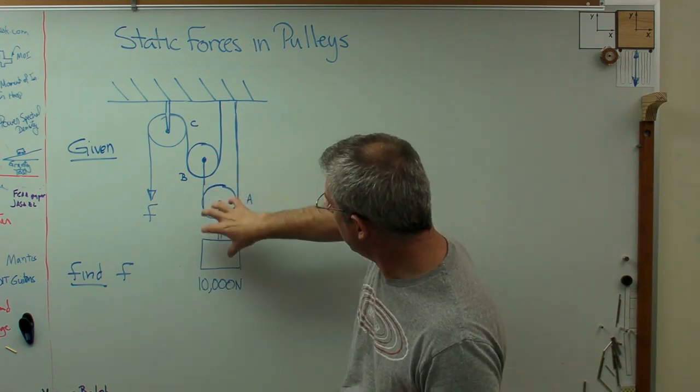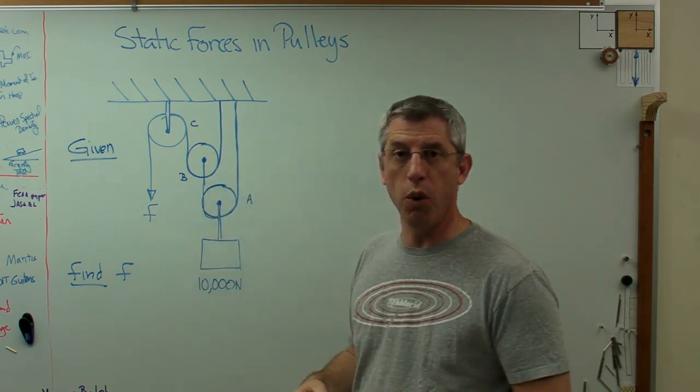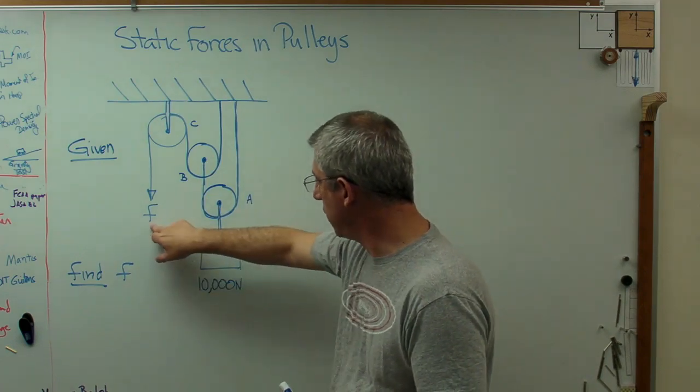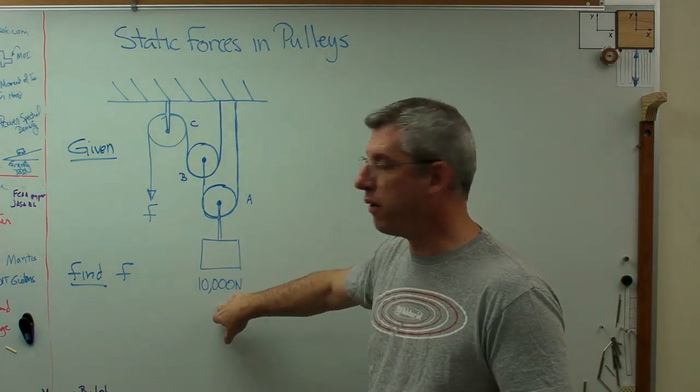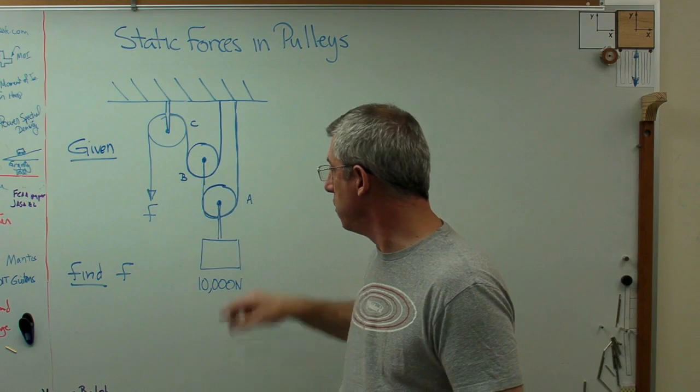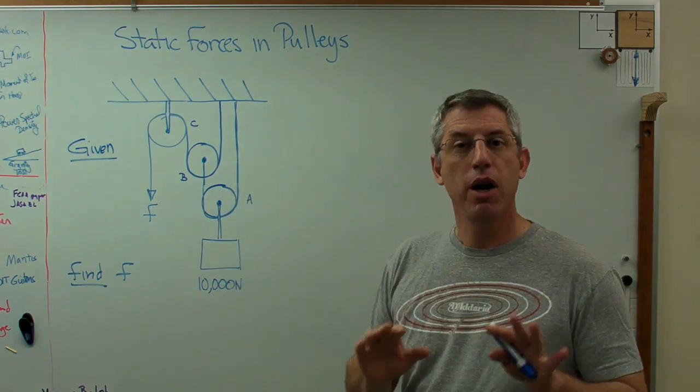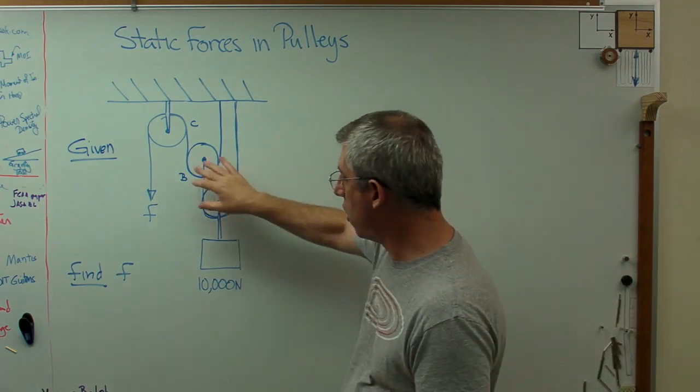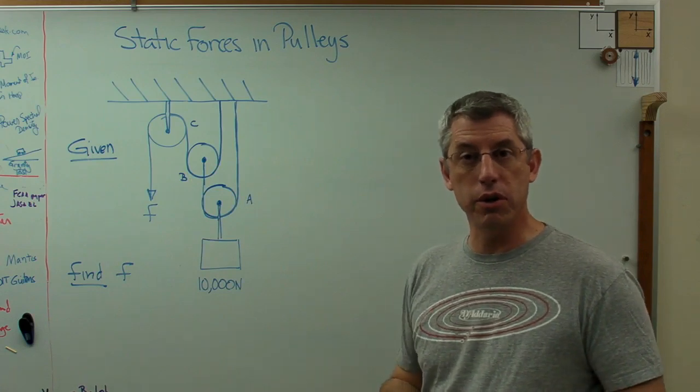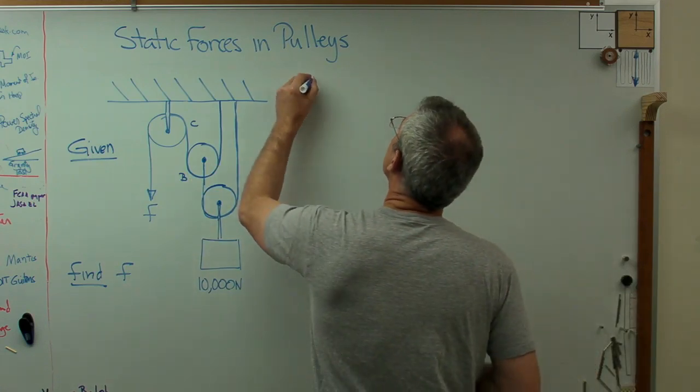Now, if you're used to looking at this, you're going to find out that this is a four-to-one mechanical advantage. This force is going to be a quarter of that because that pulley and that pulley move, and each divides the force by half. Once you get used to looking at this, you're going to notice this. But let's go through the numbers and show you why it's the case, why this is true.